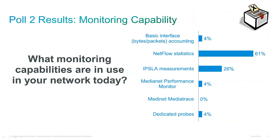Looking at the polls, about 60% of you have NetFlow deployed — that's amazing and really good. I used to be the NetFlow technical marketing engineer, and NetFlow is a great tool. You're just one step away from Performance Monitor. About 4% of you are already using Performance Monitor. Performance Monitor has a number of interfaces including a MIB, but you can continue your NetFlow deployment and just add a couple of extra fields that include packet loss and jitter to close the gap between basic NetFlow and performance monitoring enabled NetFlow.